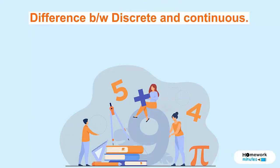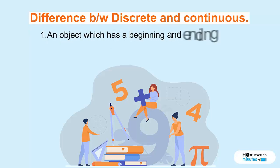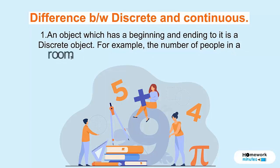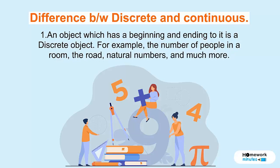Difference between discrete and continuous. An object which has a beginning and ending to it is a discrete object. For example, the number of people in a room, the road, natural numbers, and much more.